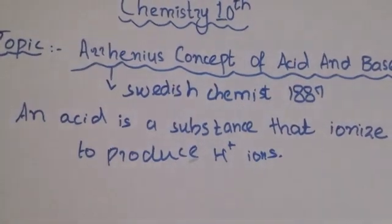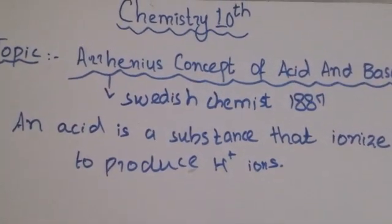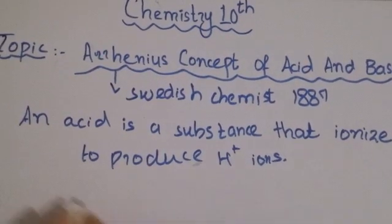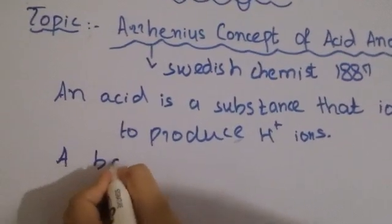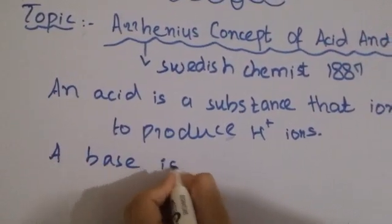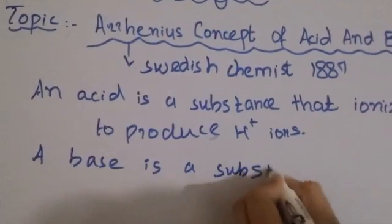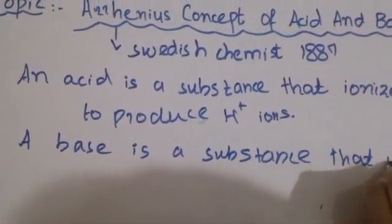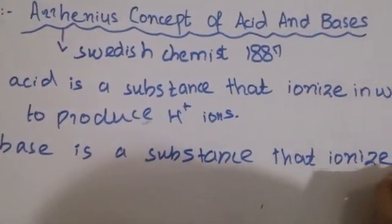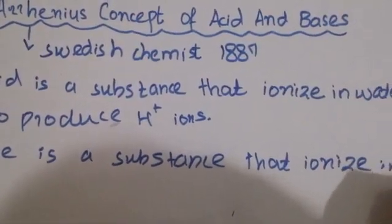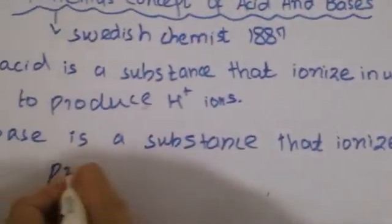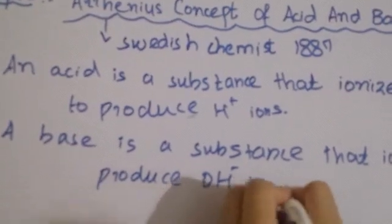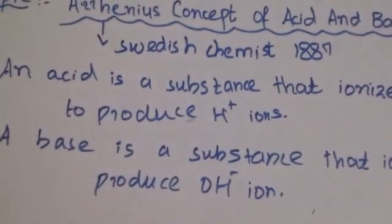Similarly, a base is a substance that, when ionized in water, produces OH⁻ (hydroxide) ions. So a base is a substance that ionizes in water to produce OH⁻ ions.